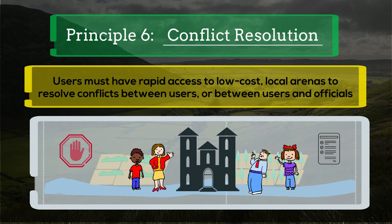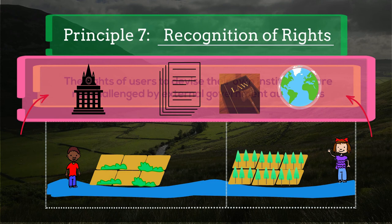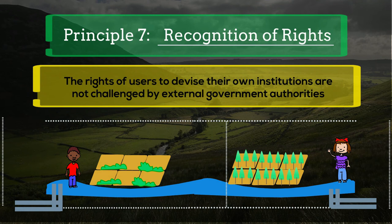Principle 7: Recognition of Rights. Communities are able to successfully manage their resources when their rights to organize and make rules for themselves are recognized by external authorities like national and international governments and protected by formal courts. When community rights are not recognized, it becomes easy for people outside the community to access, extract, or pollute the resources, and also makes it difficult to hold the community members or officials accountable for their actions.